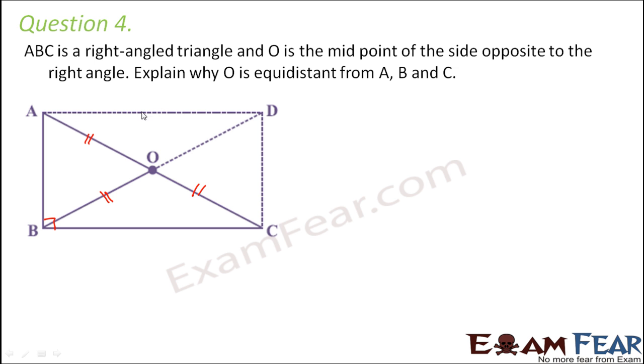Now in the diagram you see there are some extrapolated lines, which is trying to show that if you have a right triangle and if you create another triangle on the other side, these two triangles together form a rectangle.